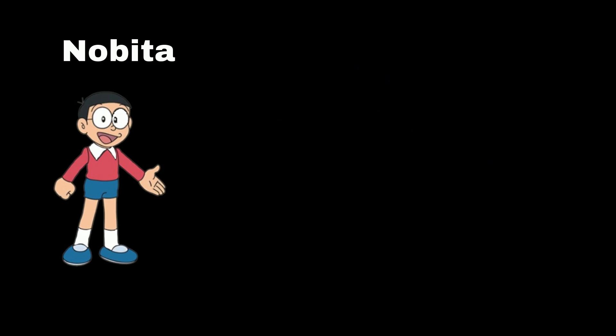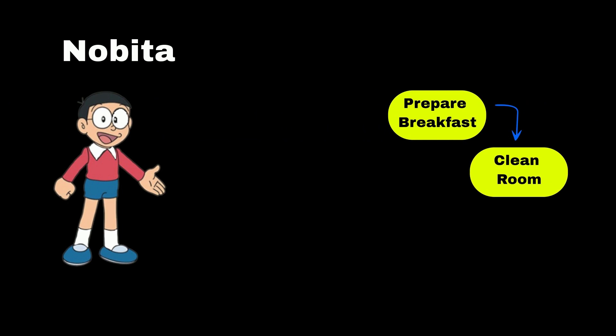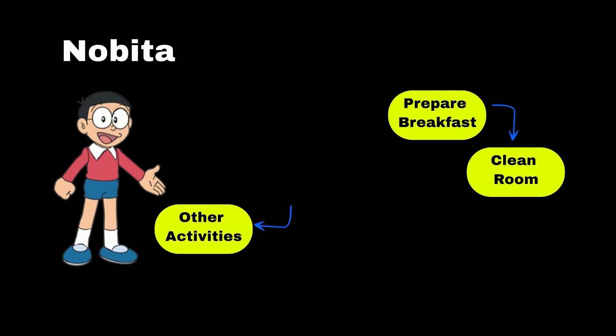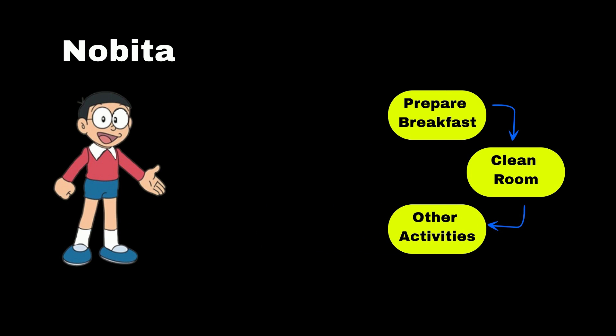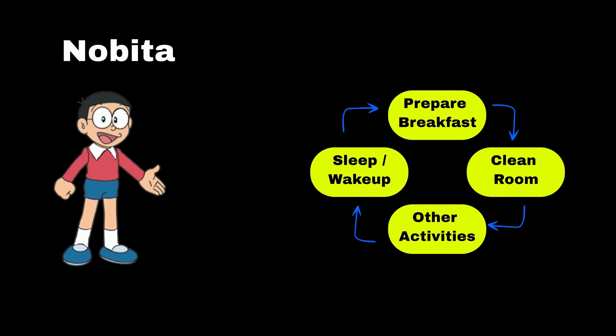Let's consider a real life example of Nobita. Every day when Nobita wakes up he will create breakfast for himself. Then he cleans his house and does all his daily activities. Again the next day when he wakes up he will perform the same tasks. So making breakfast and cleaning house are repeated tasks for Nobita.